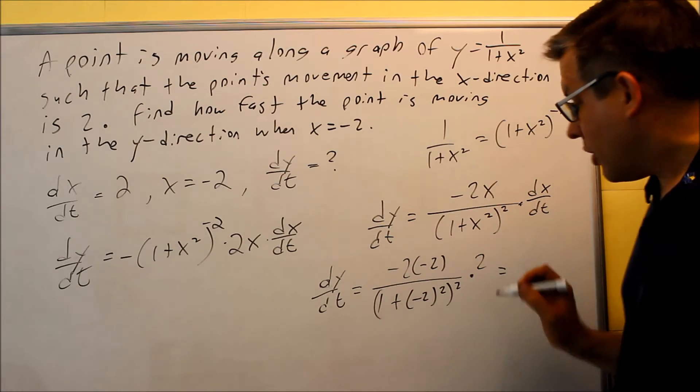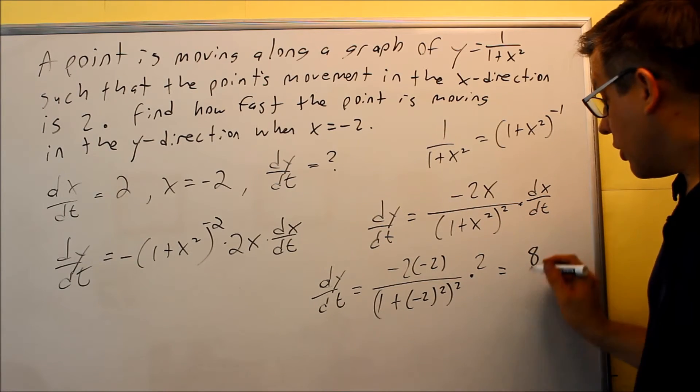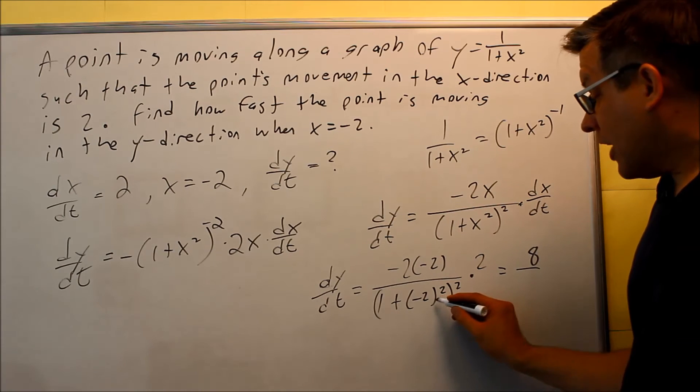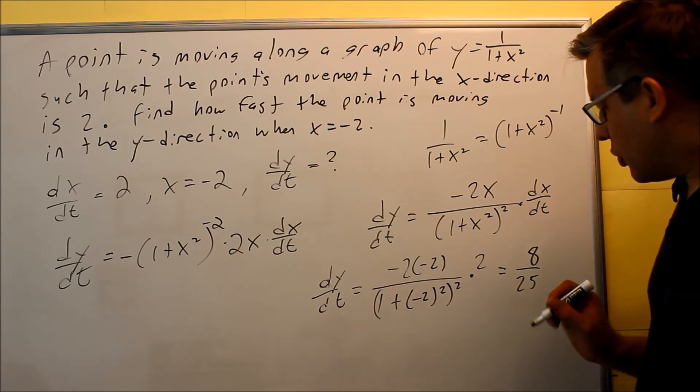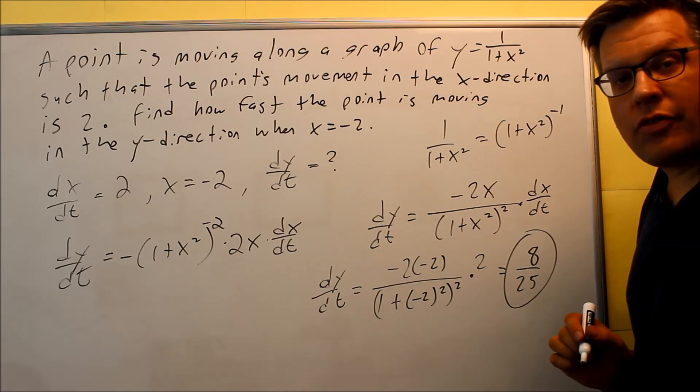If we go across the top, you're going to get positive 8—three 2s multiply together. On the bottom, 1 + 4 is 5, squared will give you 25. There's no units given in this problem, which means you can just write your answer as that. The answer to this whole problem is 8/25.